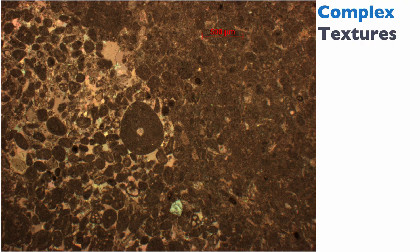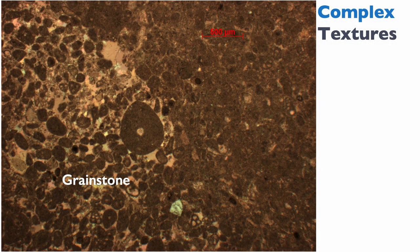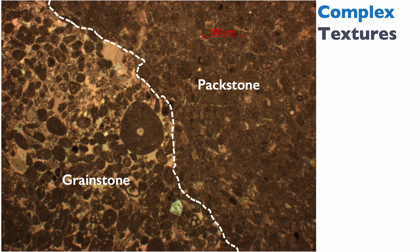One thing to know is that you can have multiple textures in the same thin section. In this example, on the left we have a grainstone with cement between the grains, but on the right we probably have a packstone because you can see grains but there's still micrite. Rocks can be named with two textural names — for instance, a grainstone-packstone or packstone-grainstone — with the first name being the most abundant texture. The limit between the two textures is indicated by a white dashed line.